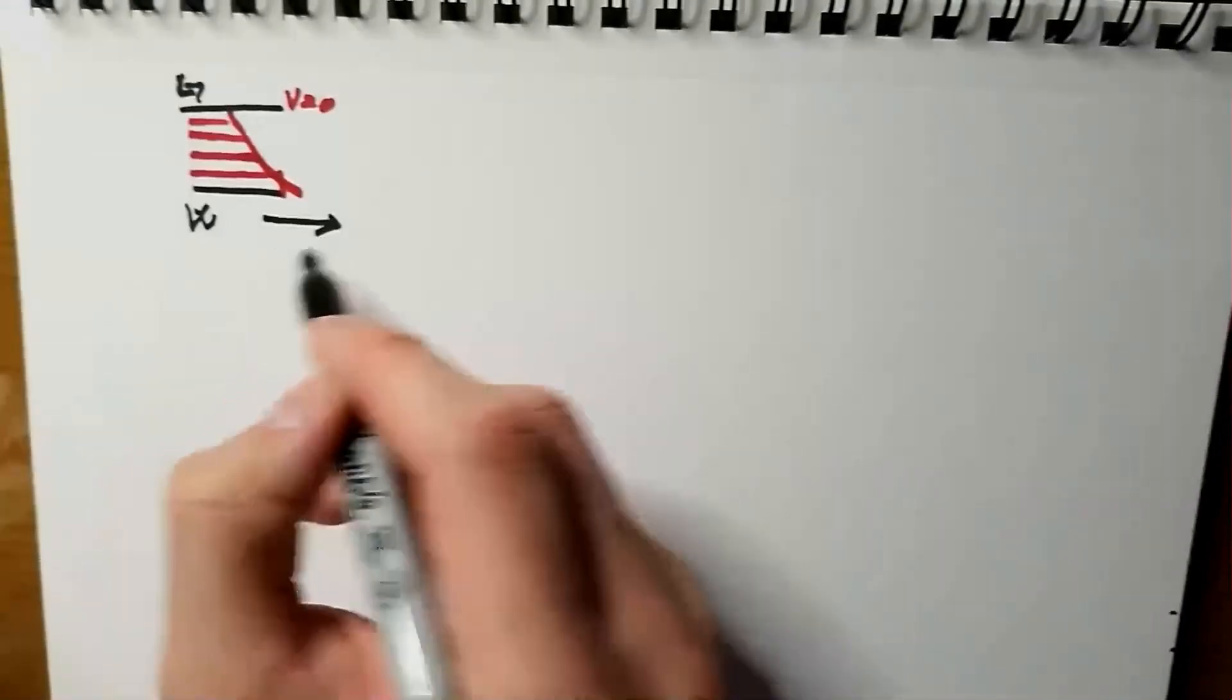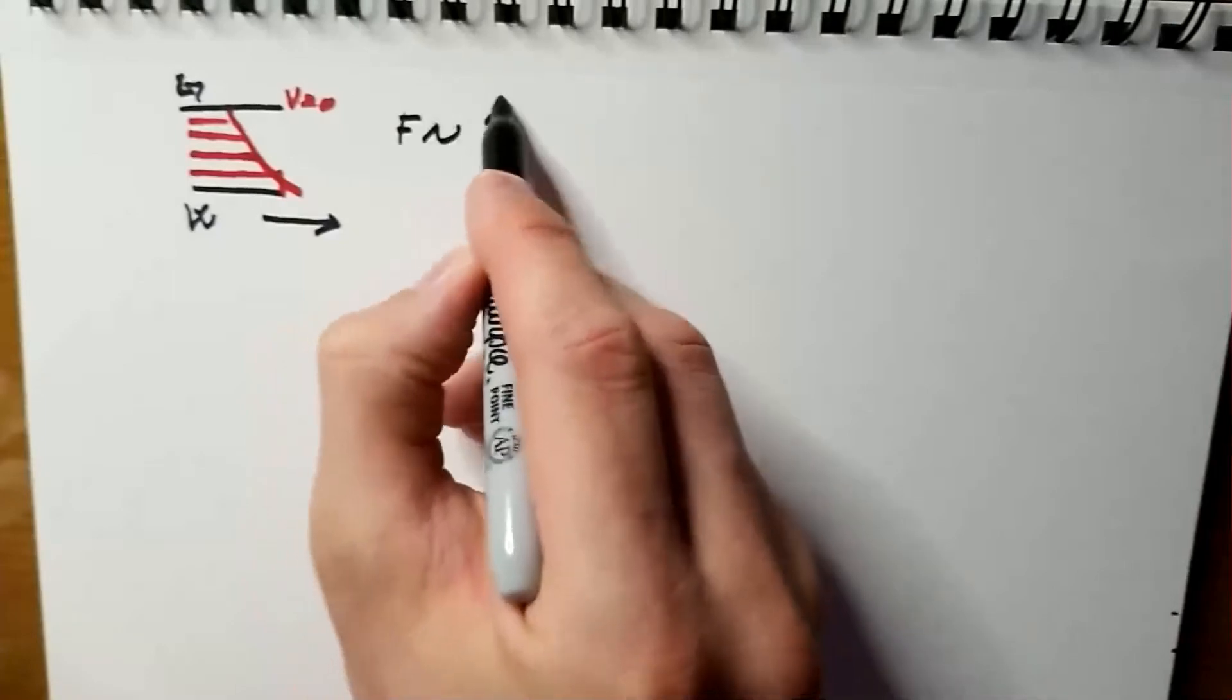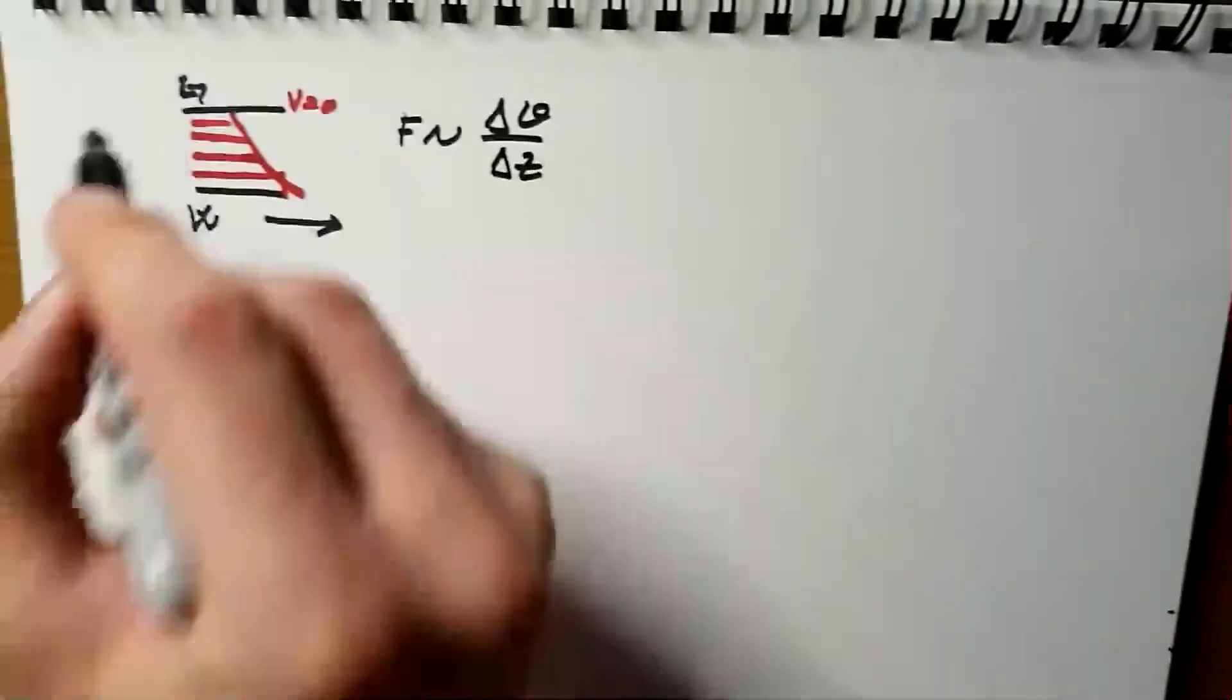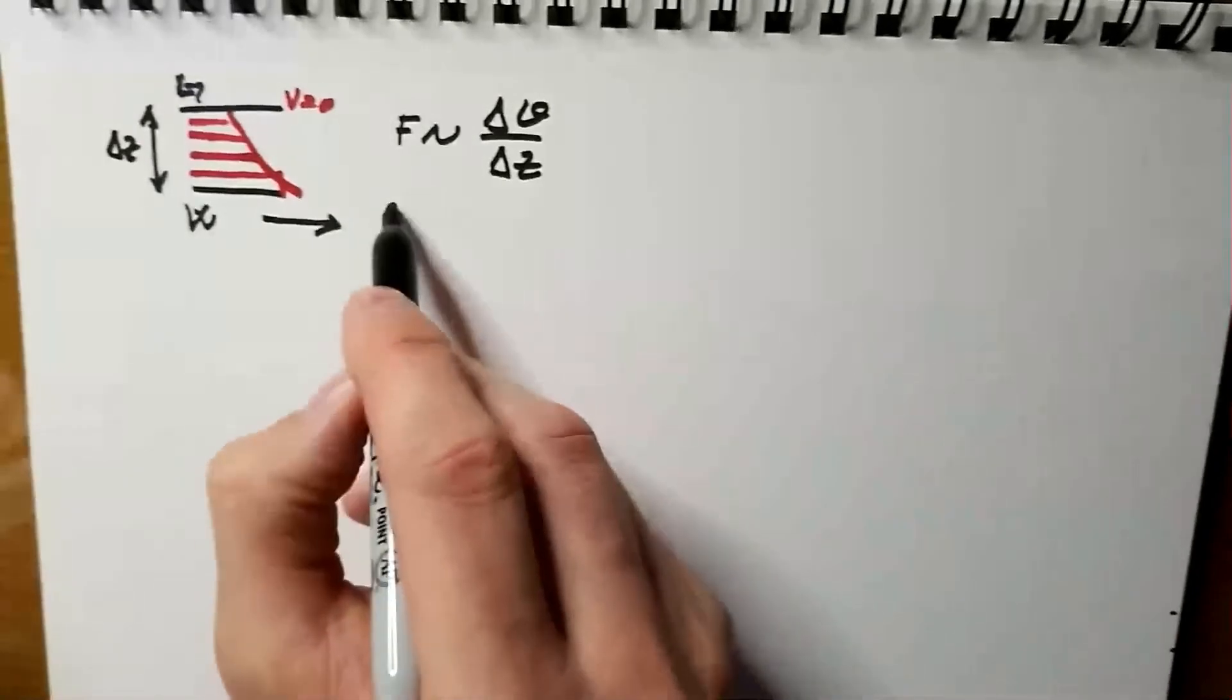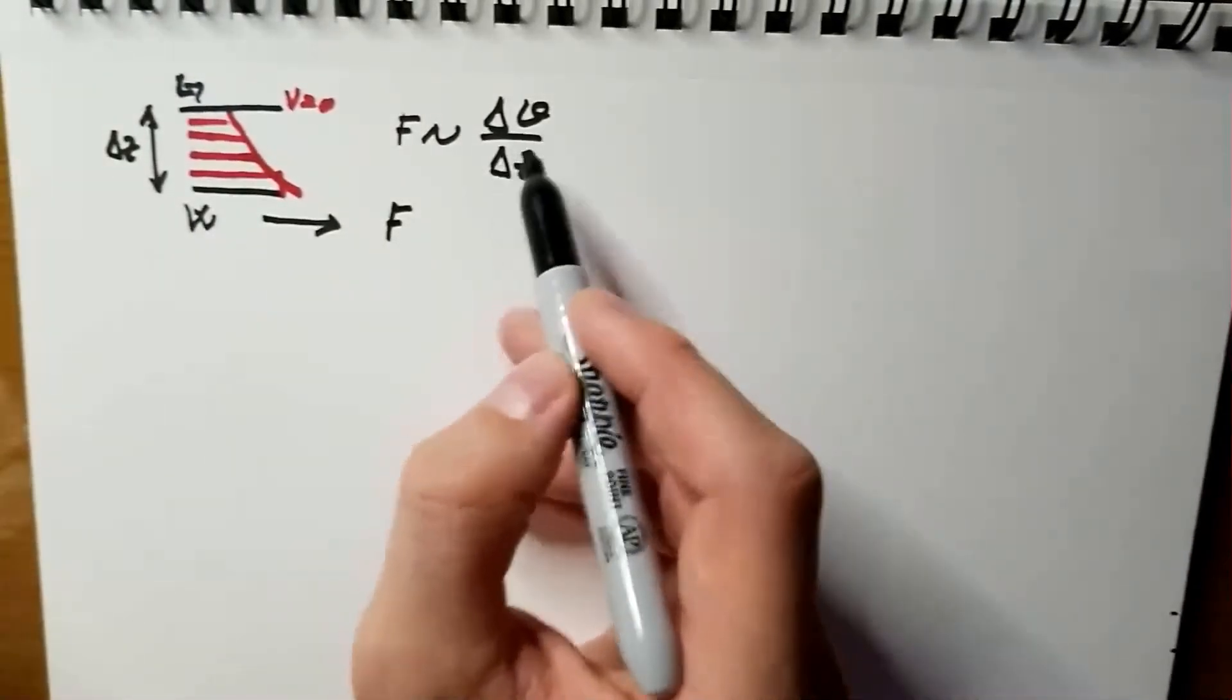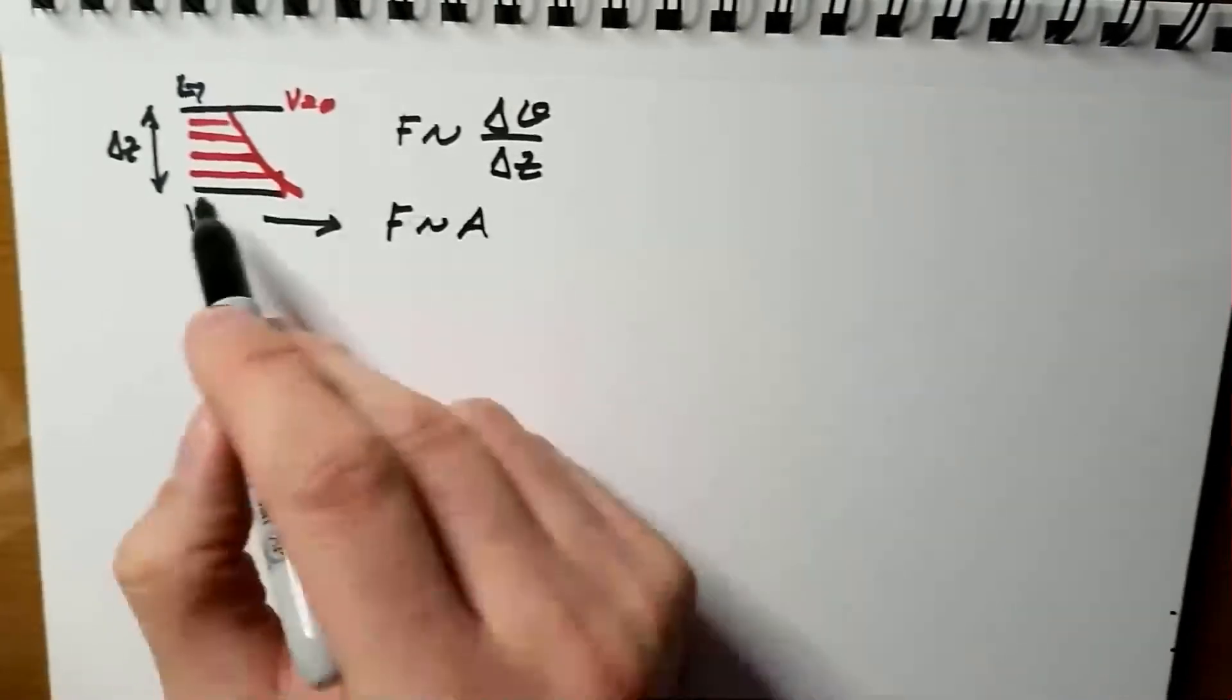The force that I applied, it is experimental evidence, is proportional to this gradient of velocity where delta z is the distance between plates. The force is also, and this is intuitive, proportional to the area of these layers.